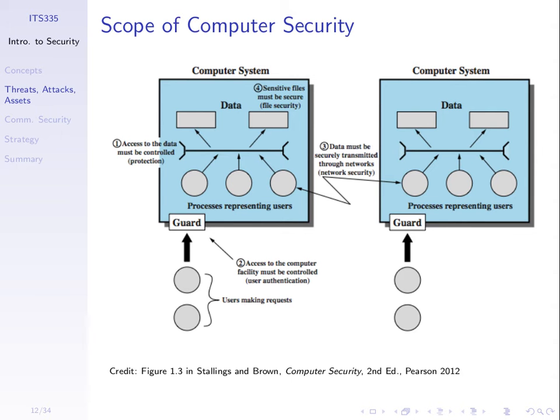Once you've logged into the computer, access control on files depends upon your user name. Permissions are given to particular users, so we must make sure the human user that logs in is the one associated with that user name or account. So user authentication is very important for many other security concepts.